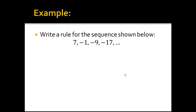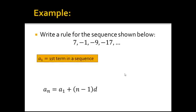So here's an example. I'm going to ask you to write a rule for the sequence shown below. 7, negative 1, negative 9, negative 17. If we use the general form, the first thing we can do is find the first term, which is really straightforward in this case. That's obviously going to be 7. So I know a sub 1 is 7, so where I see a sub 1 in the general form, I pop a 7 in its place.